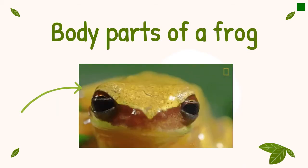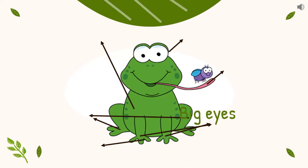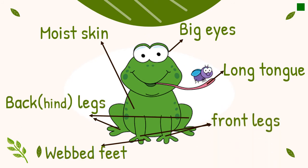Now let's learn about the body parts of a frog. Frogs live near ponds. Here we have the frog's big eyes, and they have moist skin covering their body — of course, they don't have scales.